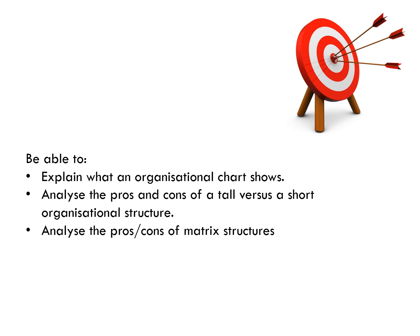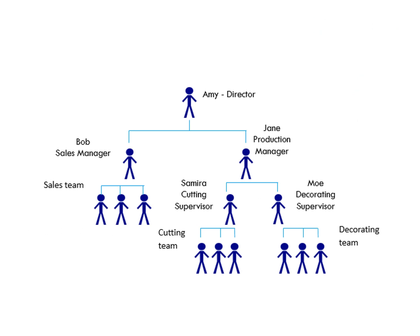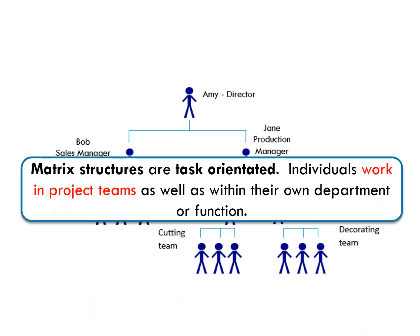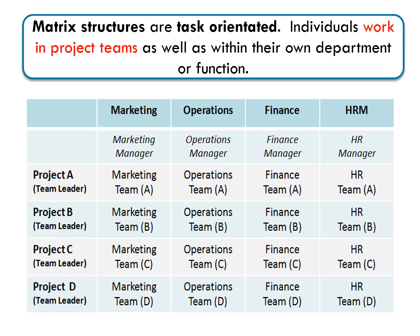Now let's look at the pros and cons of a matrix structure. Here we can see the traditional organizational structure — top down, with roles organized in the business. But sometimes people are also organized into teams or departments to work on particular projects, so they might be part of a project team as well as their own department or function. The business can be organized in more of a matrix form, reading down as well as across like a grid.